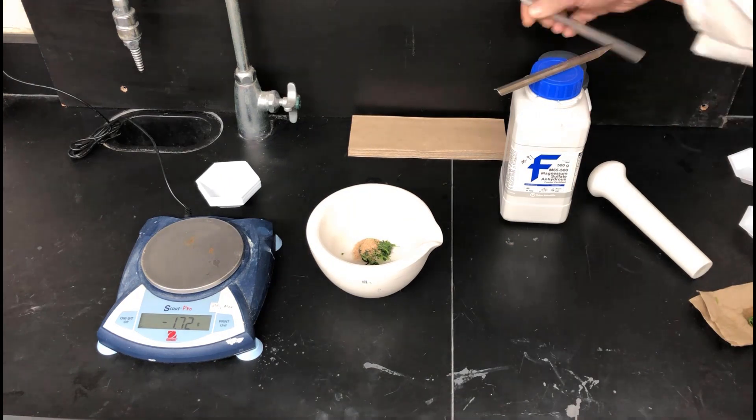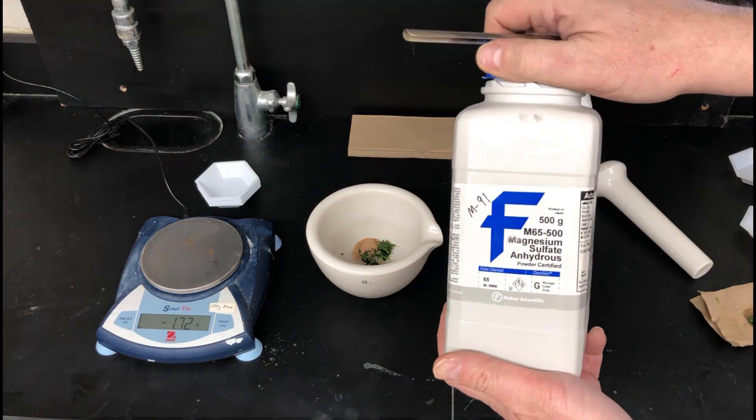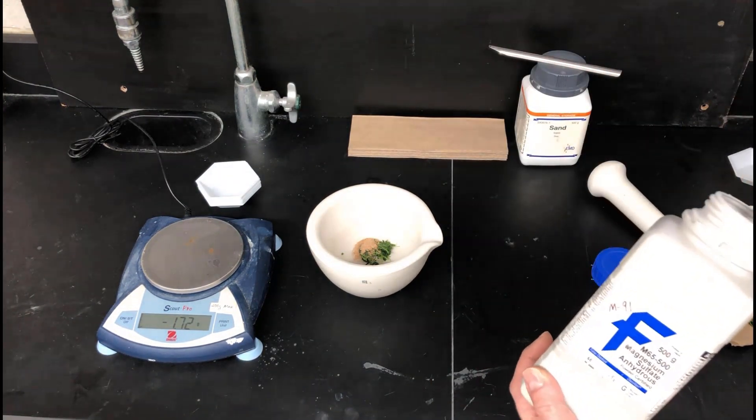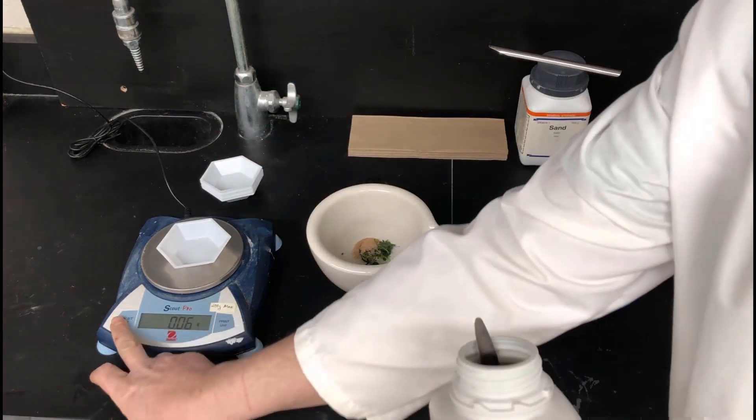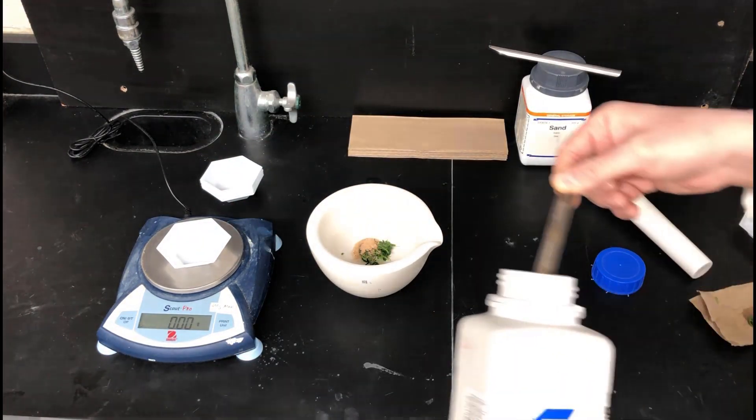Next I'm going to measure out some magnesium sulfate. So this magnesium sulfate is a drying agent. This is anhydrous magnesium sulfate, so it absorbs water and grabs onto water pretty tightly.